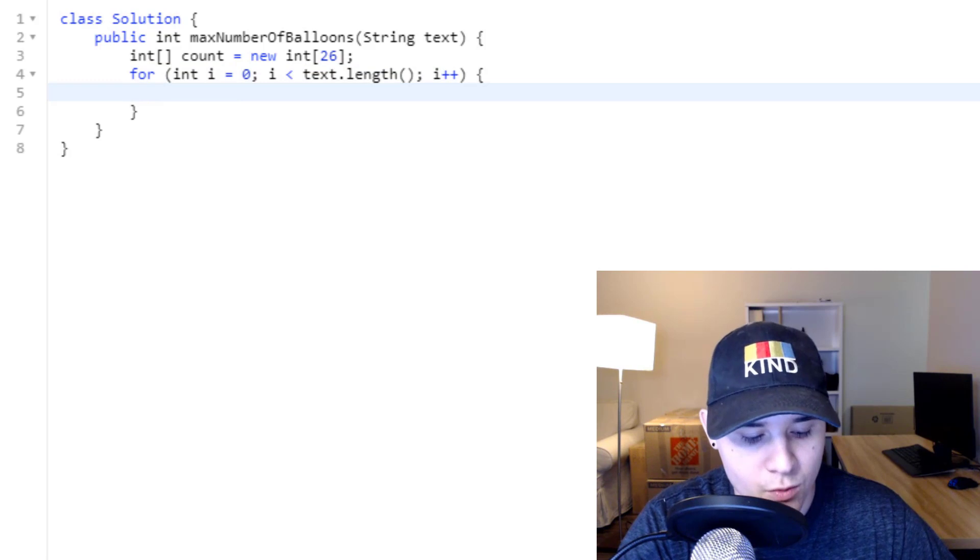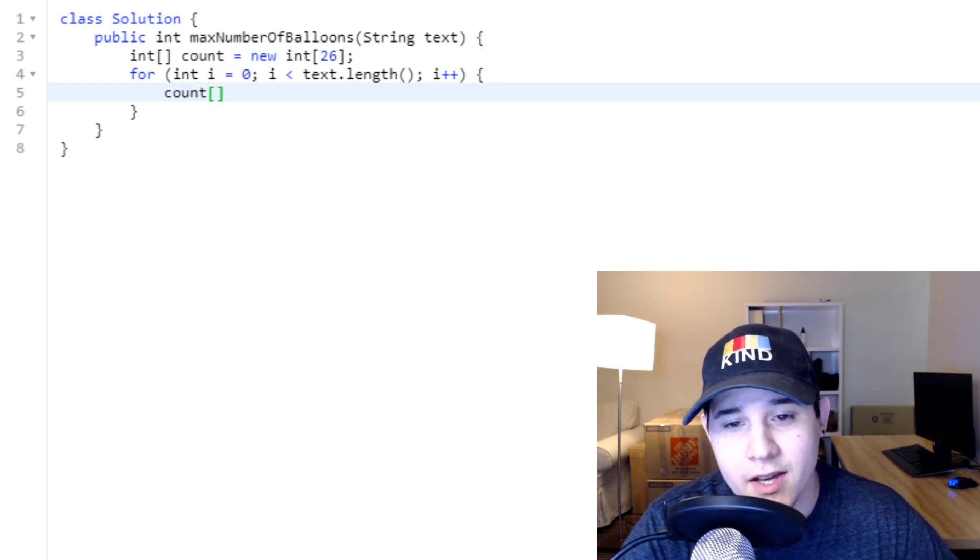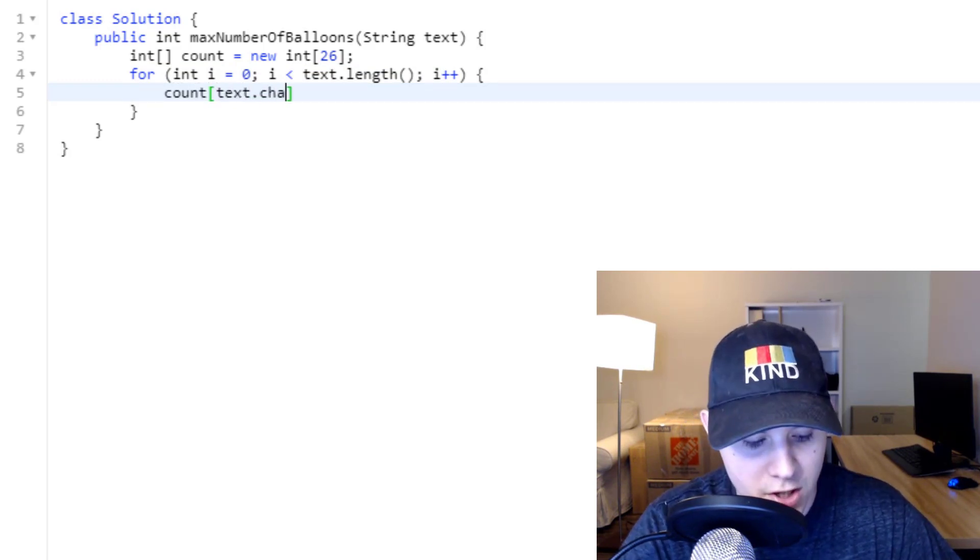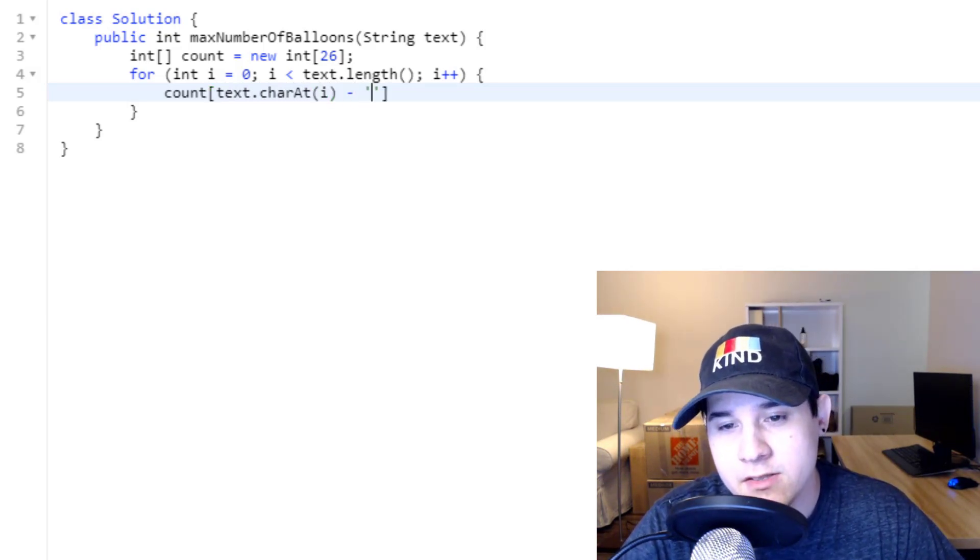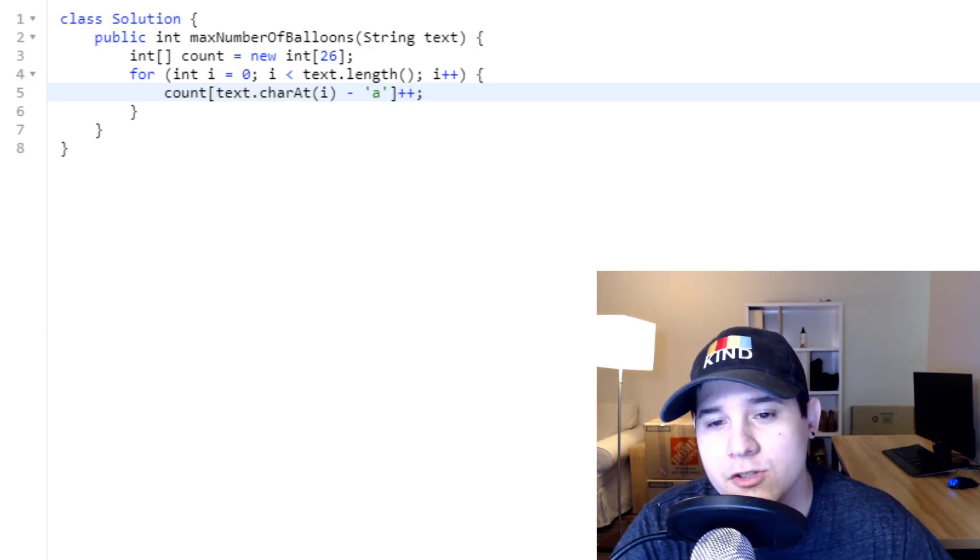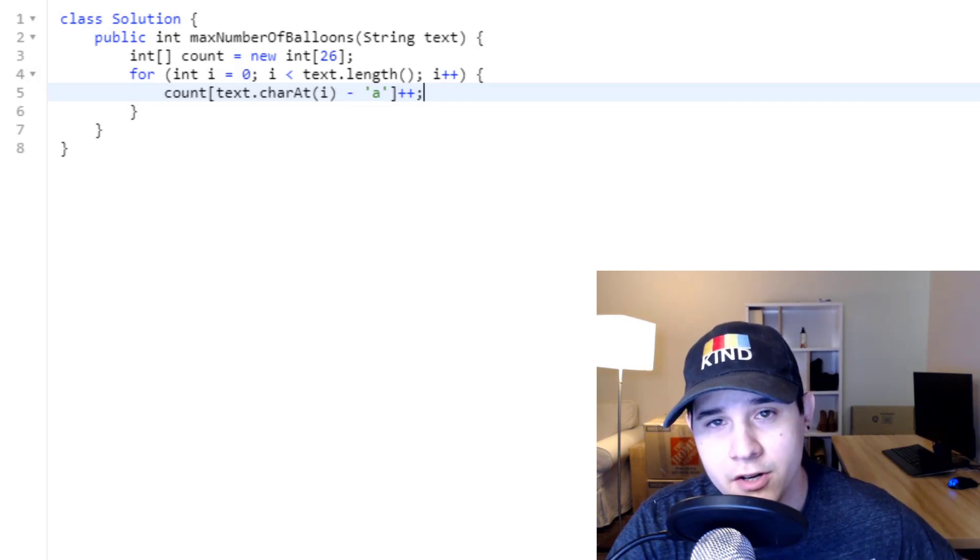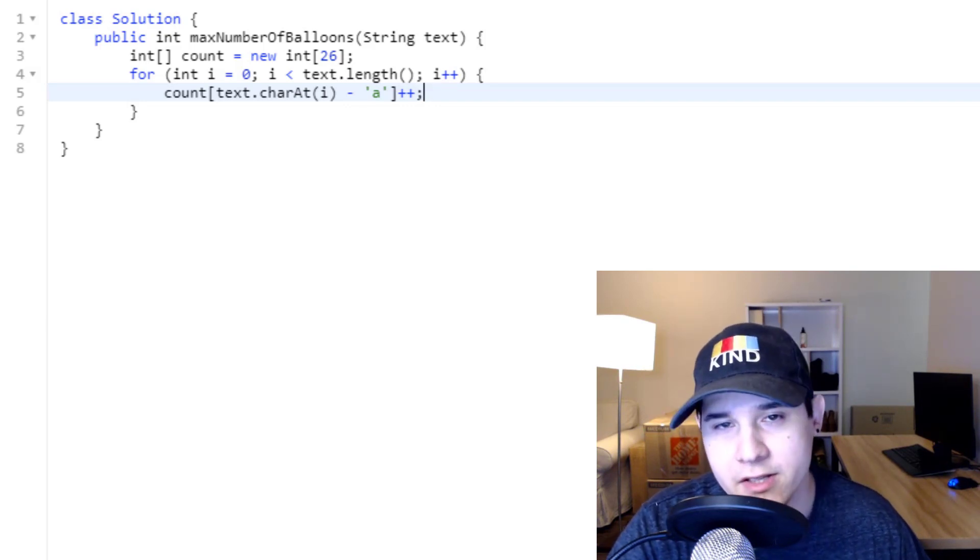So we're going to loop over our text. So we could say text dot length i plus plus. And now we're going to go into count, and we're going to say text dot char at the index i minus the character a, and then we just need to increase it. Because subtracting the character a from any other lowercase letter will give us the appropriate index that we're looking for.